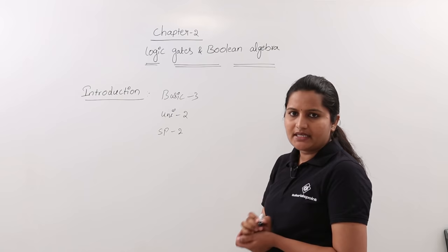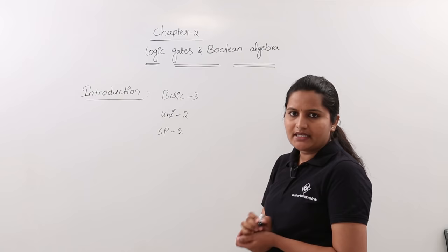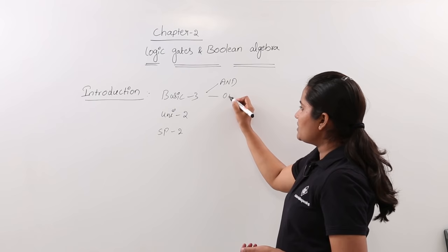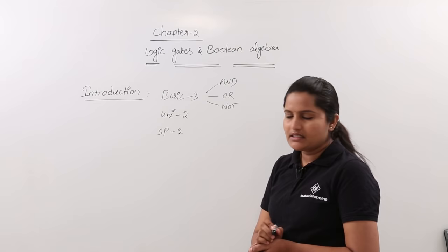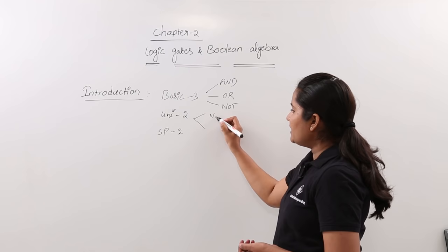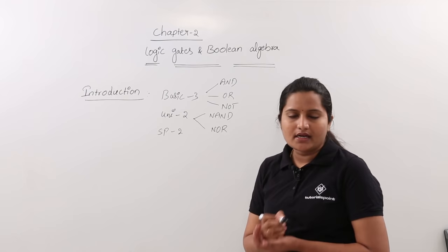The three basic gates are AND gate, OR gate, and NOT gate. The two universal gates are NAND gate and NOR gate. NAND gate and NOR gate are called universal gates.